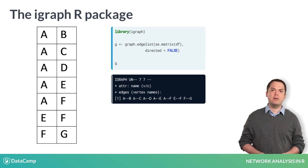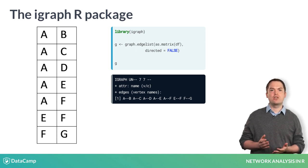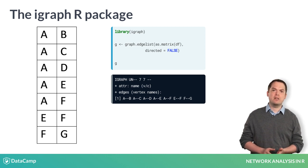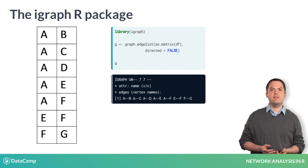The first step is to create an iGraph object. This can be done directly from raw data. Say you have the edge list on the left. Using the graph.edgelist function, supply the raw data as a two column matrix as the first argument. The second argument specifies that the graph is undirected. We shall discuss this further in the next section.